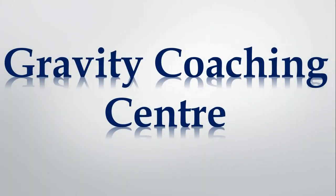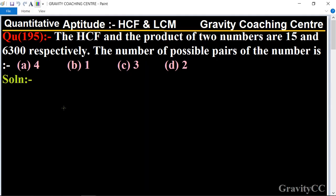Welcome to our channel Gravity Coaching Center, quantitative aptitude chapter HCF and LCM, question number 195. The HCF and the product of two numbers are 15 and 6300 respectively. So the number of possible pairs of the numbers is?